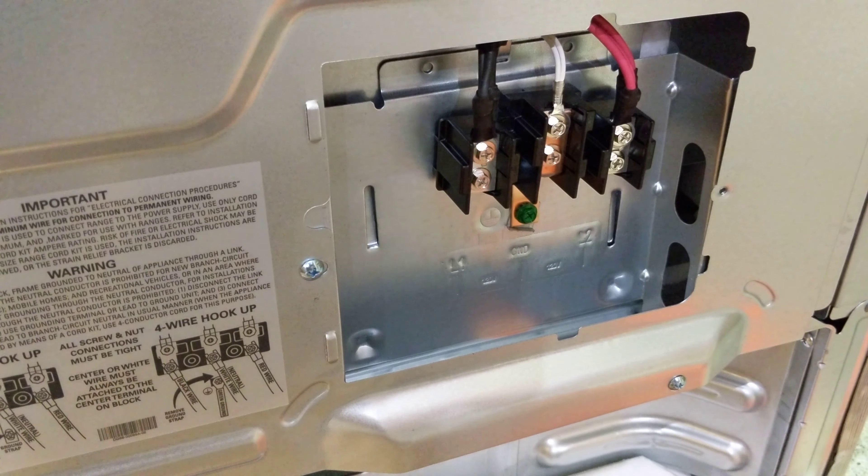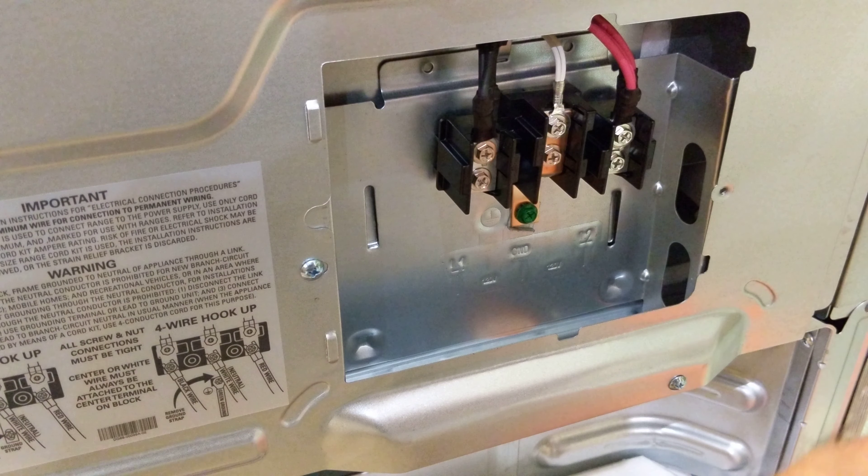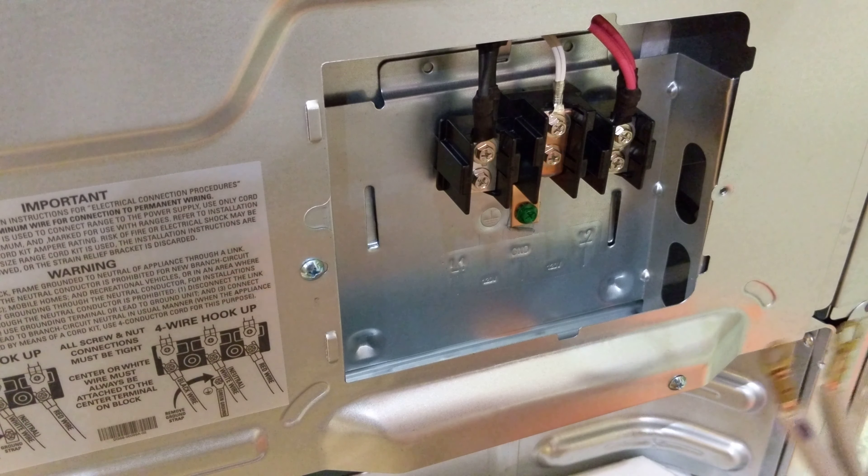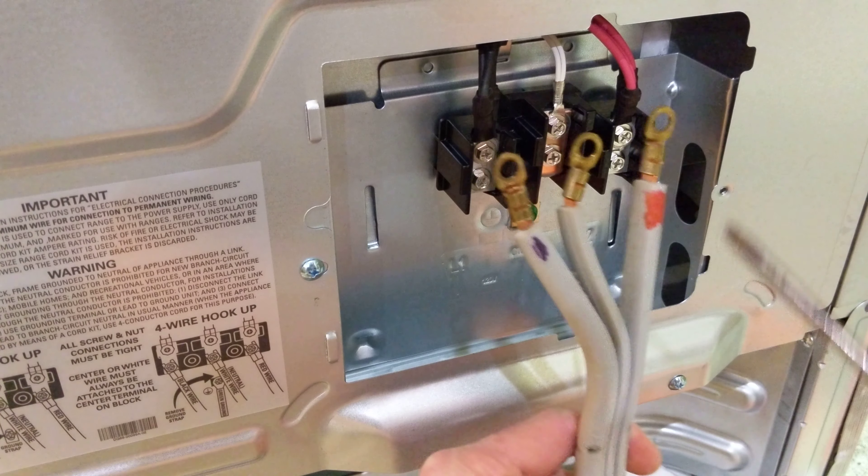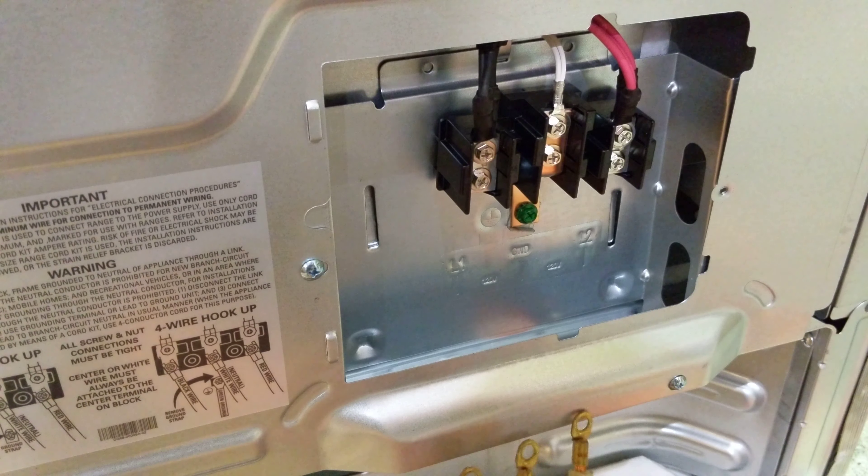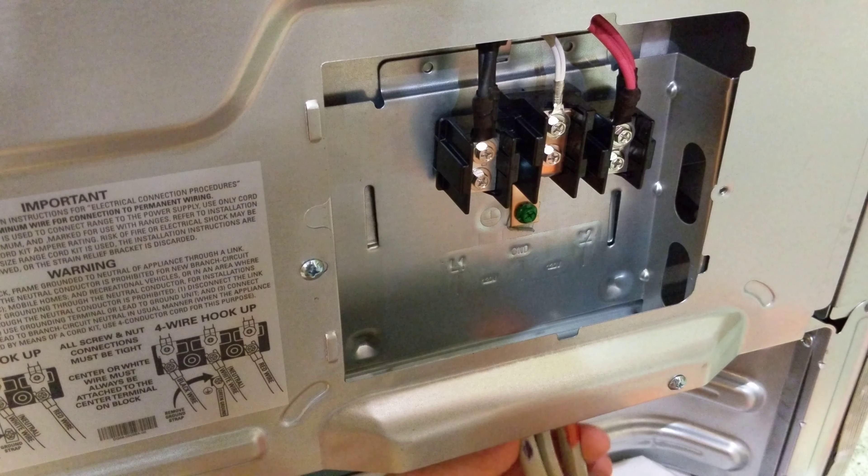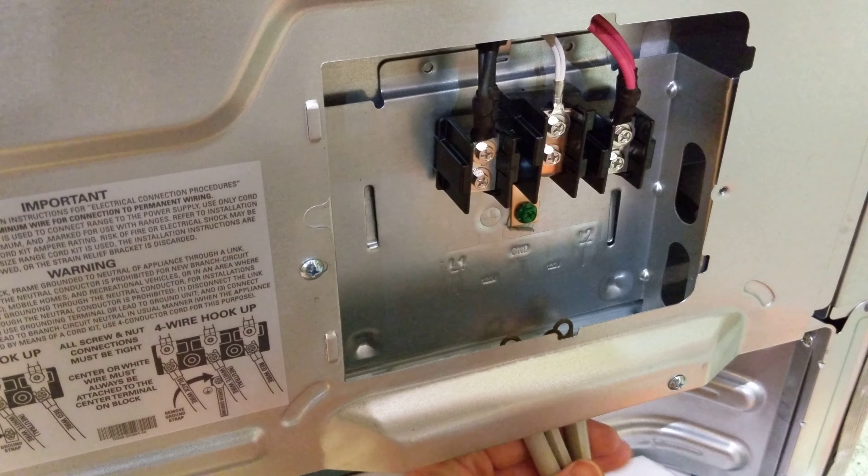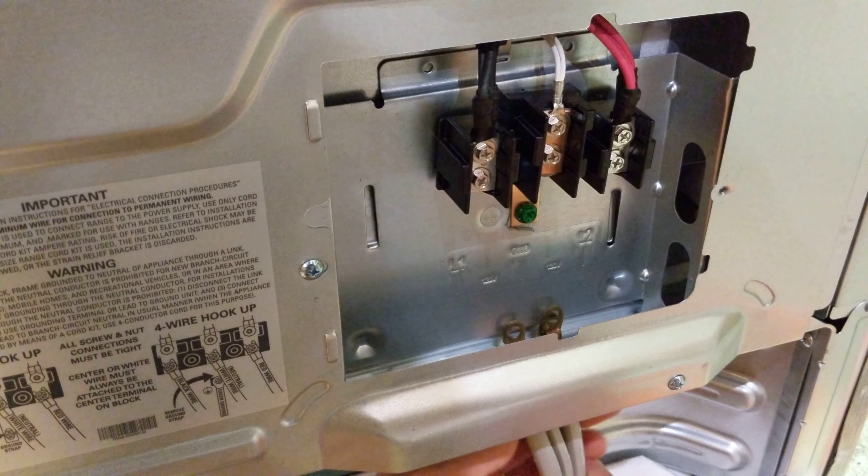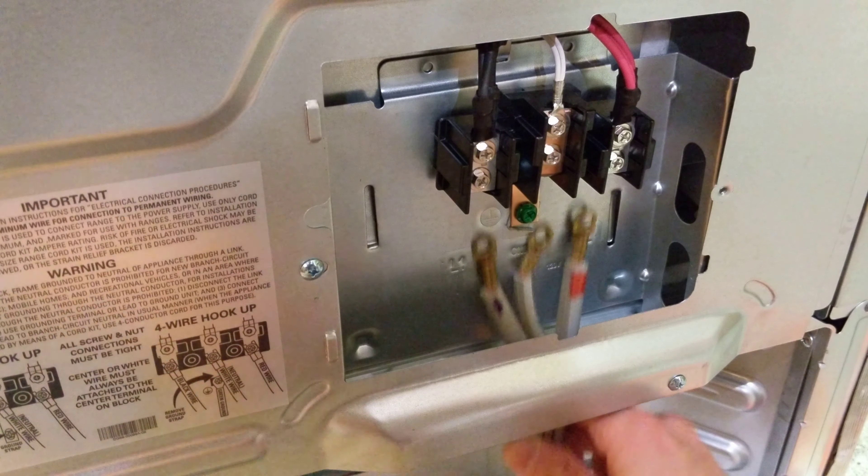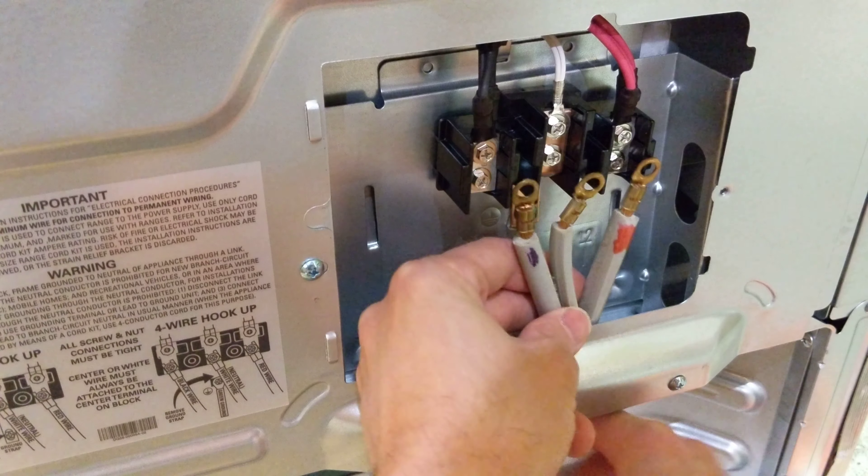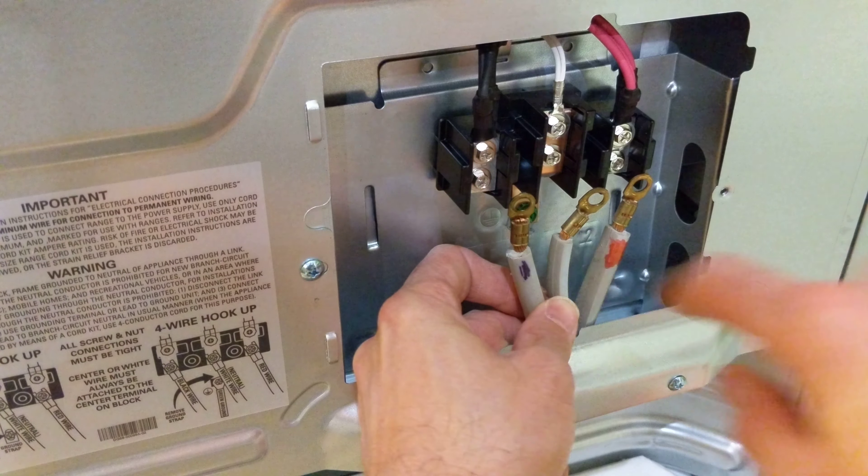So going over the new stove here, we're basically just gonna repeat in a different order. Make sure, right here, we're gonna go up through the bottom here, just like that. This already has the grounding bar on there.